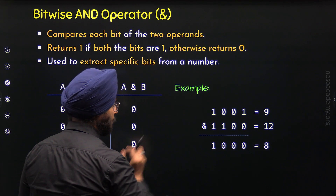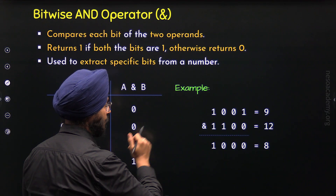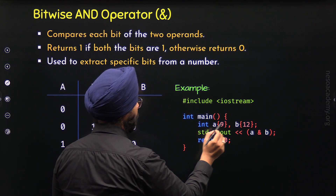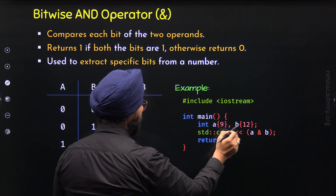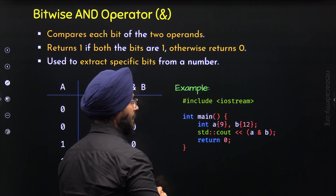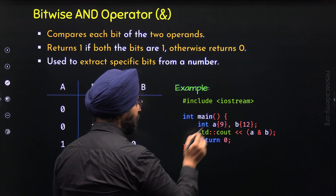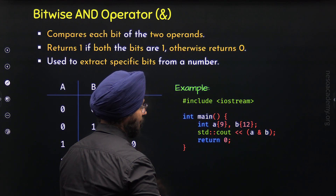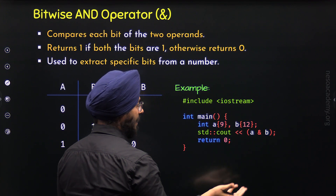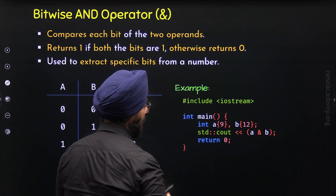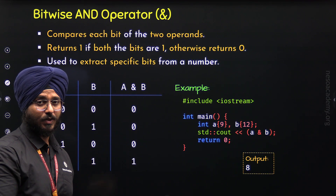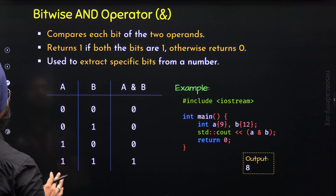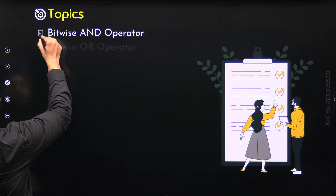Now let's implement this example through a C++ program. Here I have included the iostream header file, and in the main function I have defined variables A and B, initialized with values 9 and 12 respectively. After this, I have performed the Bitwise AND operation on A and B. We know Bitwise AND of 9 and 12 is 8, so with the help of std::cout we get the result as 8. This is the output we get from this program. With this, we have understood the Bitwise AND operator and are done with the first topic.